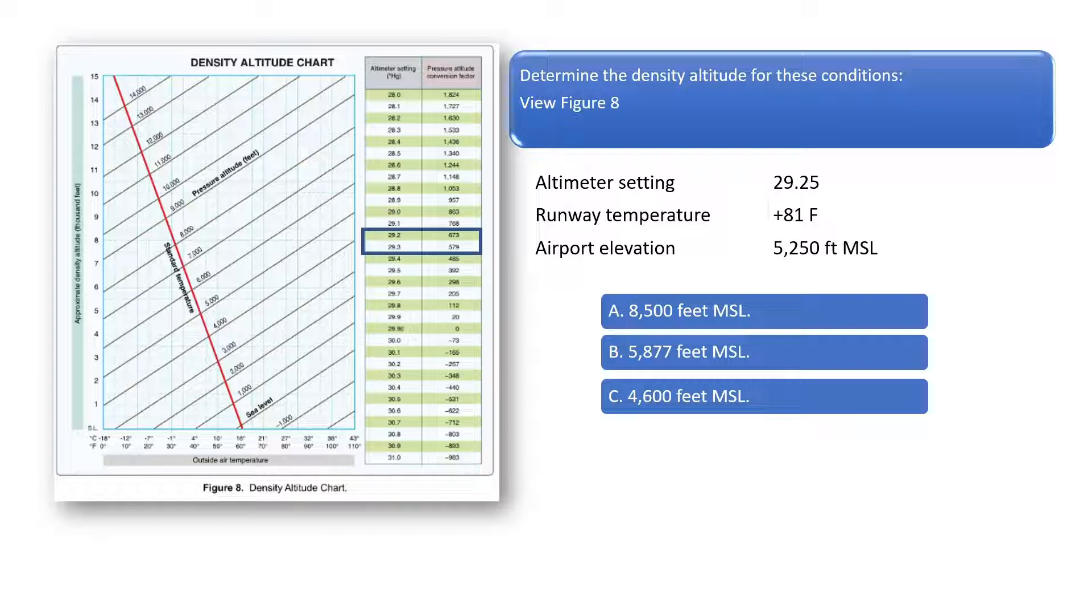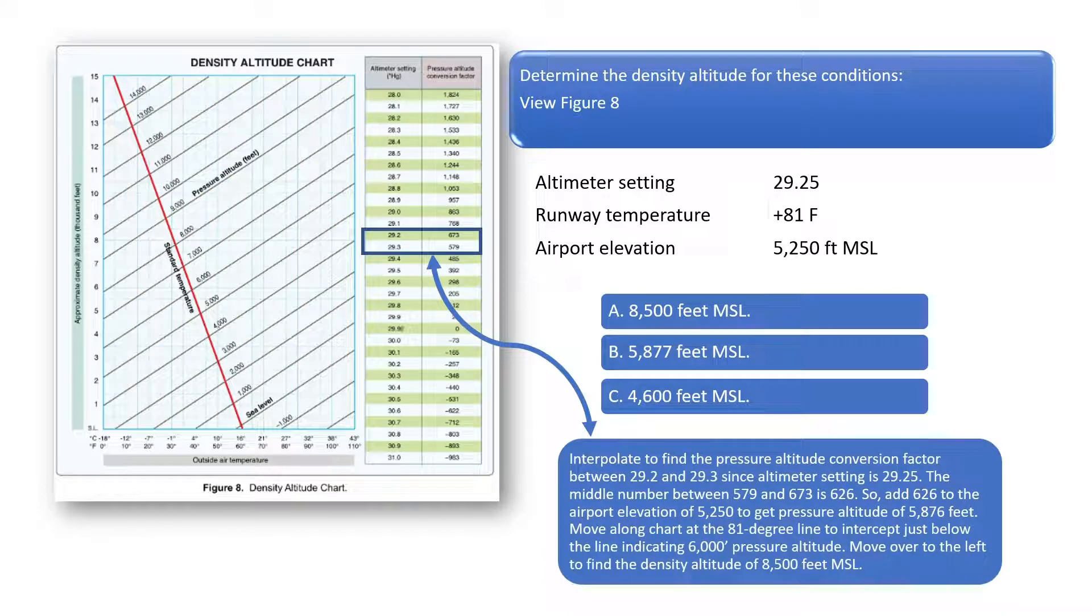Since the altimeter setting is 29.25, we can find the middle number between 579 feet and 673 feet to be 626. Just take the sum of 579 and 673 and divide by 2 to get the pressure altitude conversion factor of 626 feet.